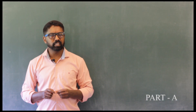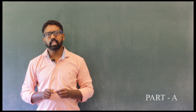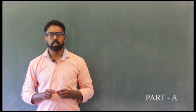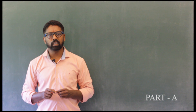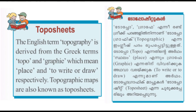Certain restrictions have been placed on strategies and regions owing to national security concerns. The English term 'topography' is derived from the Greek terms 'topo' and 'graphia,' which mean 'place' and 'to write or draw' respectively. Topographic maps are also known as topo sheets.